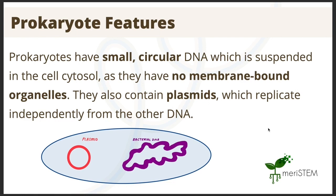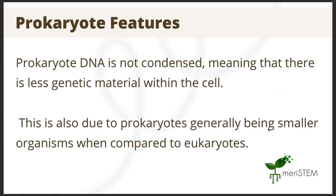In addition to the bacterial DNA, prokaryotes also contain genetic material in plasmids. These are small and circular and have the ability to replicate independently. Because of this feature, plasmids are frequently used in research for genetic engineering. It is important to note that they contain less genetic material than eukaryotes.